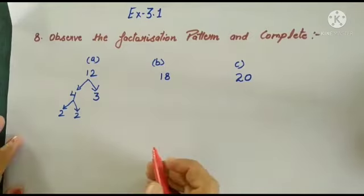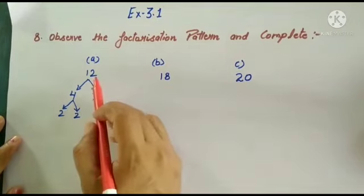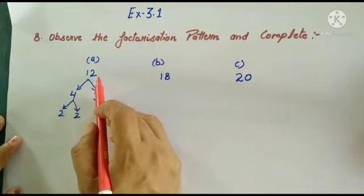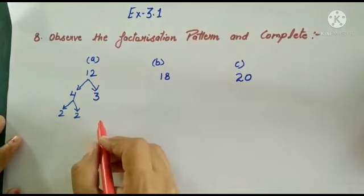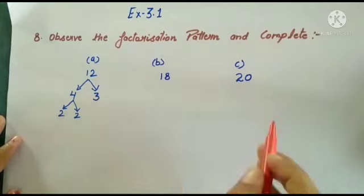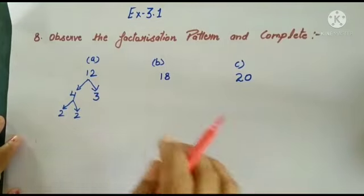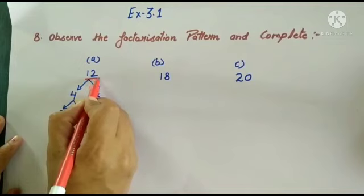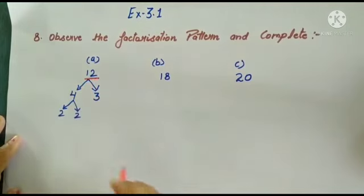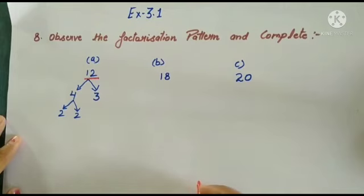Now we have to look at the first sum. You have to look at the next sum as well. The first sum is 12. 12 is made on the table. In this case, we have to look at the last number.